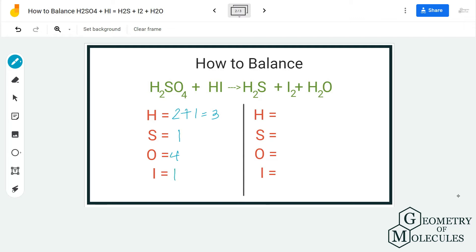Now if you move forward to the product side, for hydrogen we have 4 hydrogen atoms because there are 2 over here and 2 over there. For sulfur we have 1, for oxygen we have 1, and for iodine we have 2. Now this is a quite tricky part because none of these are balanced apart from sulfur.